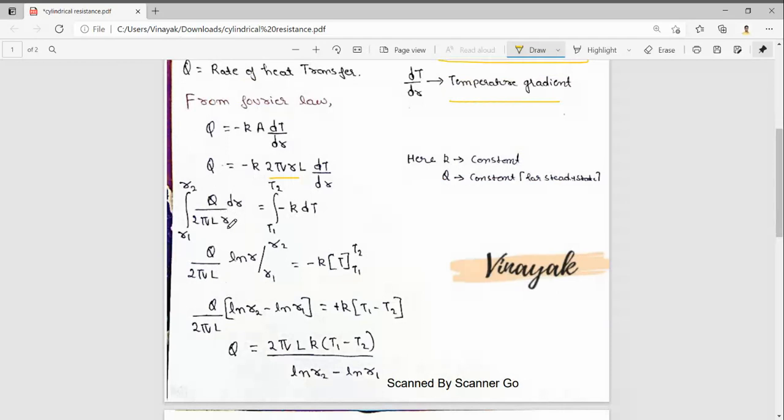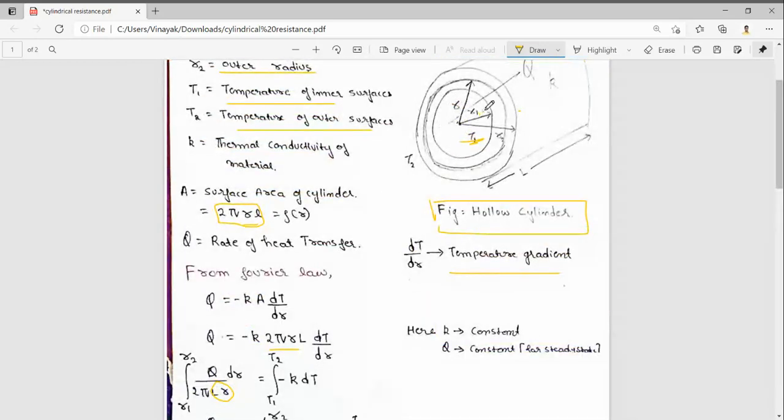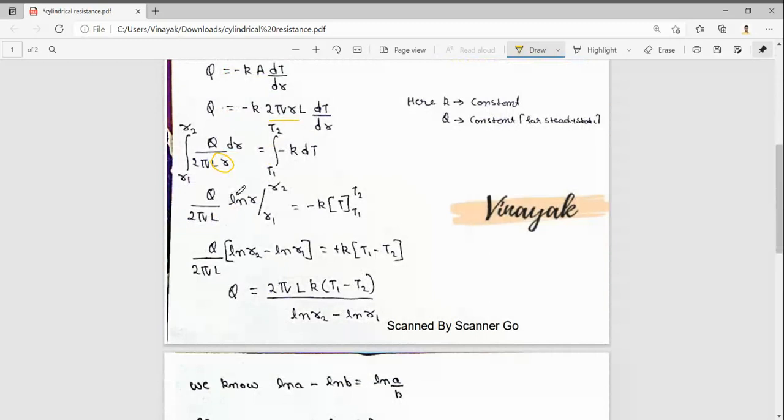the variable is R, so we integrate 1/R with limits from R1 to R2, and T1 to T2. The integration of 1/R is log R, and the integration of dT is T. By substituting the limits, we get Q/(2πKL) times (log R2 - log R1) equals K times (T1 - T2).